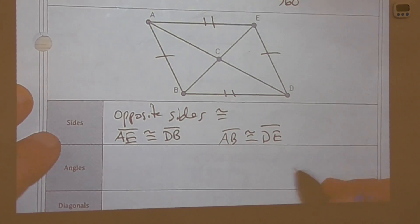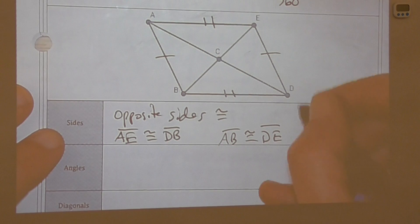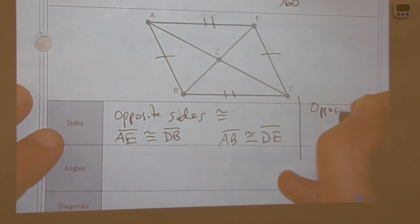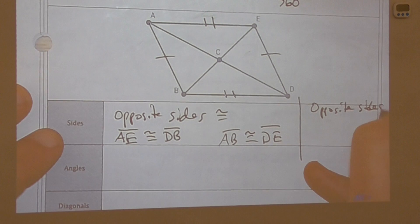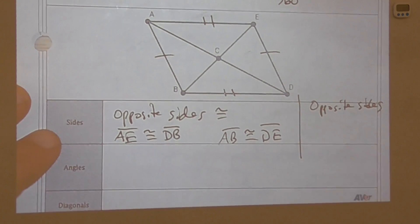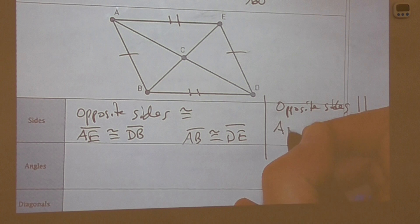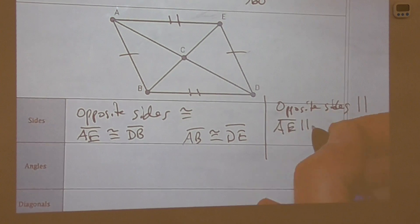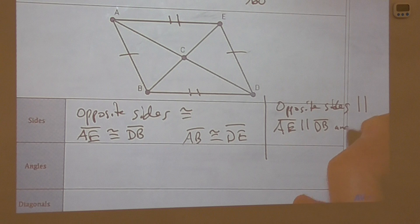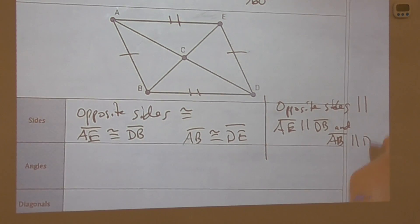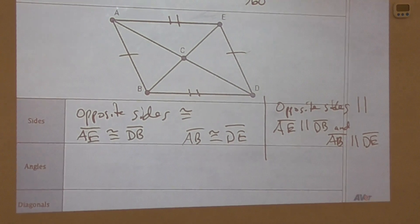Opposite sides are parallel, so AE is parallel to DB and AB is parallel to DE.